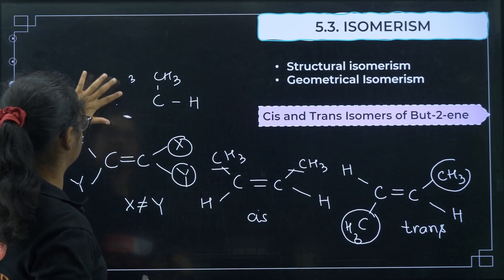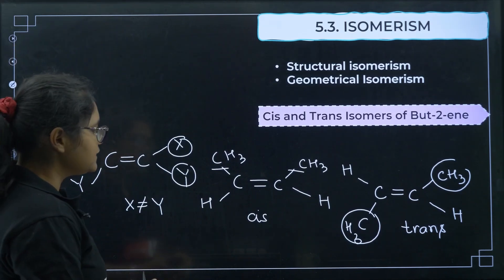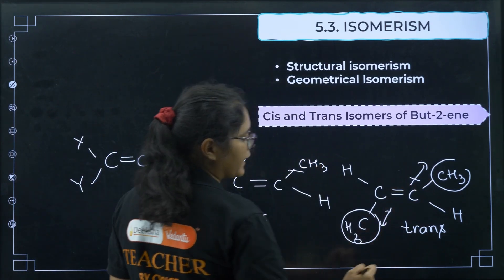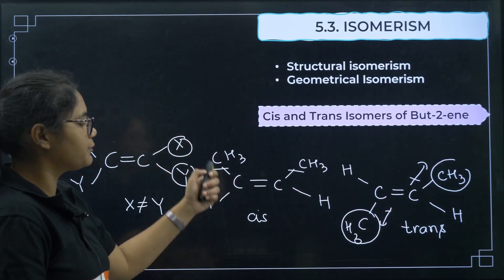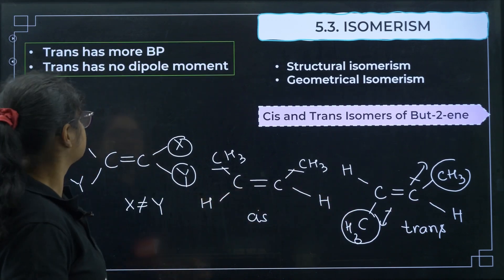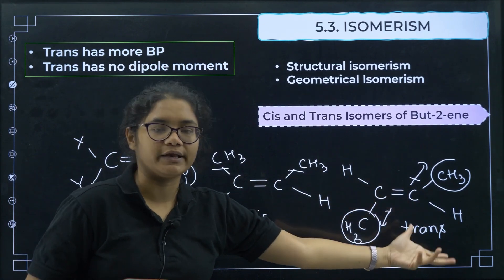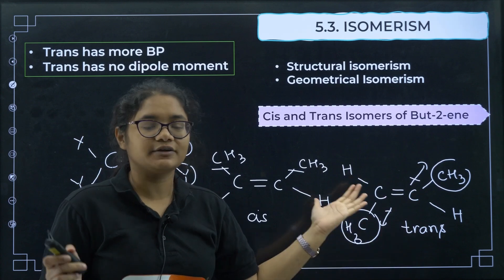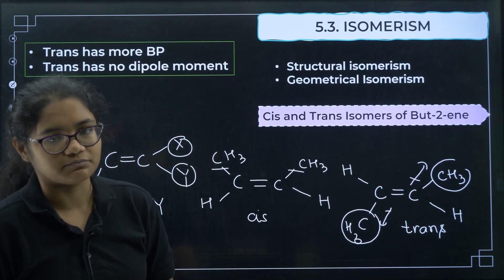Key properties: in the trans isomer, the net dipole moment gets cancelled out, so trans isomers are non-polar. In the cis isomer, the net dipole moment does not cancel, so cis isomers are polar. Also, trans isomers always have a higher boiling point than cis isomers, because the trans geometry fits into the lattice more effectively.